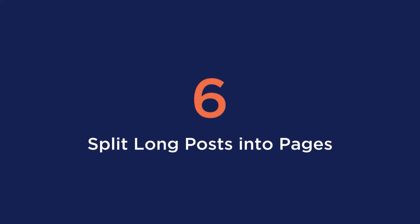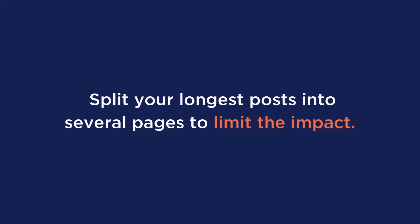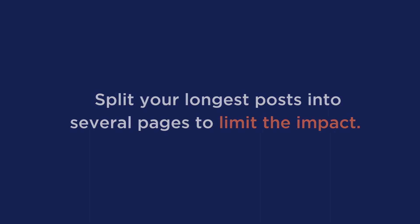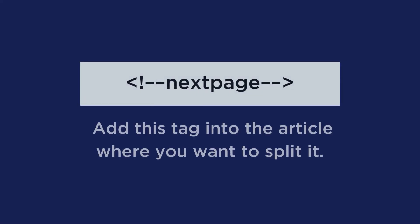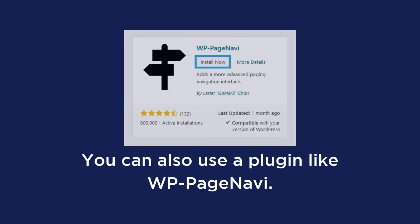Number six is to split your long posts into pages. Google loves long posts, but more content also means more pictures and more content to load. One consideration is to split your longest posts into several pages to limit the impact. However, keep in mind that if you enable lazy loading — one of the tips covered in the beginner ways to speed up your site — your long text should not affect your performance. To split your long posts, simply add a tag into the article where you want to split it, or use a plugin like WP Page Navi.